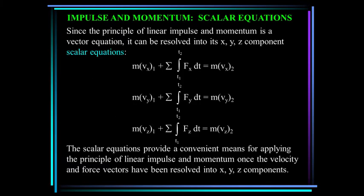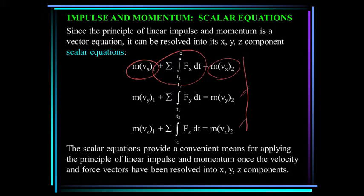Chapter 15.1 was on impulse and momentum, and here you can see the three scalar equations in the x, y, and z directions. Basically, this means that the problem has two states. At state one, the mass times the velocity in the x direction plus the integral of all the forces in the x direction integrated over time is equal to the momentum at state two, and the same for the y and the z direction.